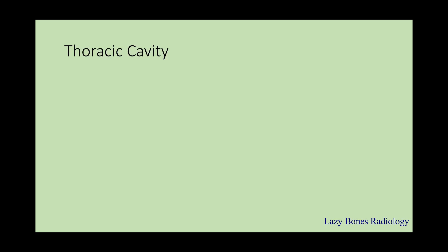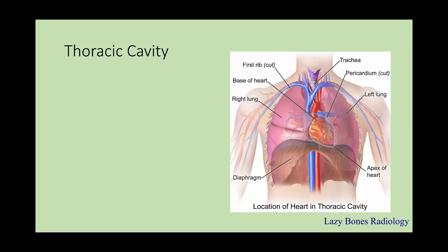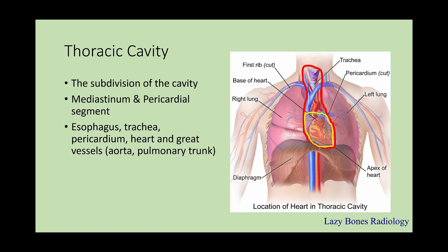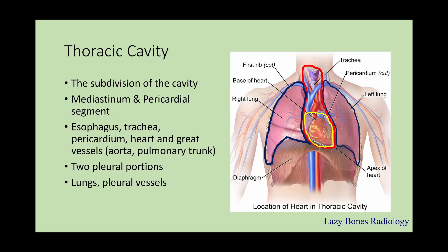The first cavity is the thoracic cavity. This subdivides into the mediastinum, which contains the pericardial segment. Within the mediastinum, the esophagus, trachea, pericardium, heart, and great vessels — for example, the aorta and the pulmonary trunk — are located. Next, there are the two pleural portions, within which the lungs and pleural vessels are located.